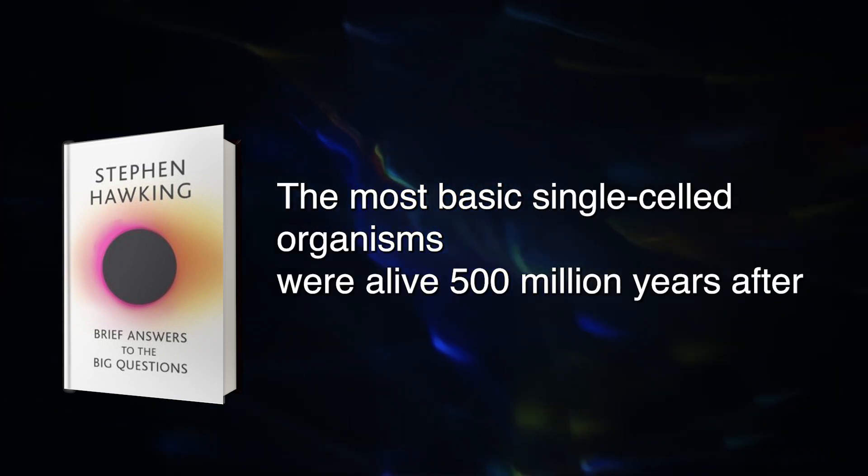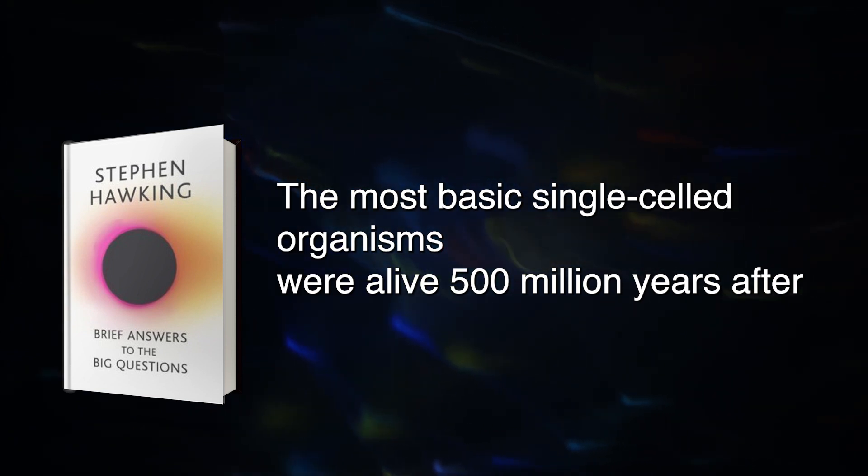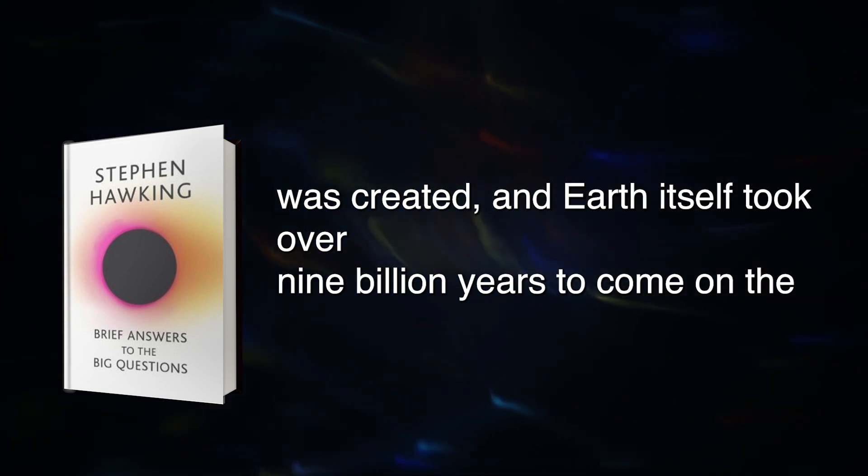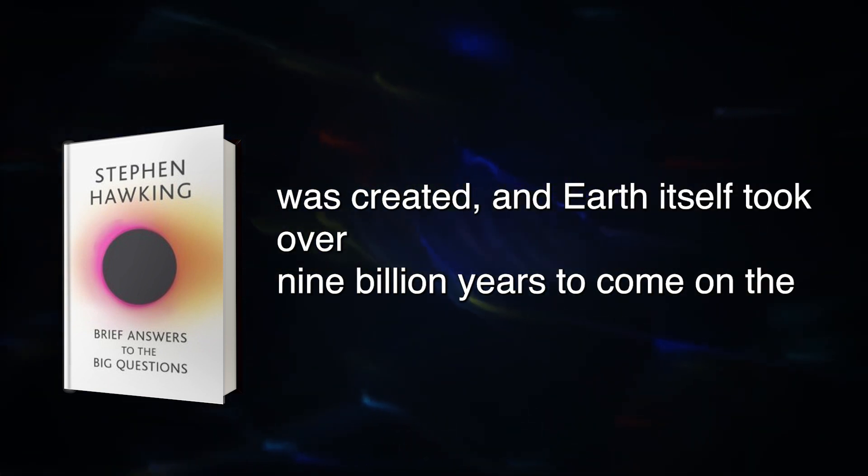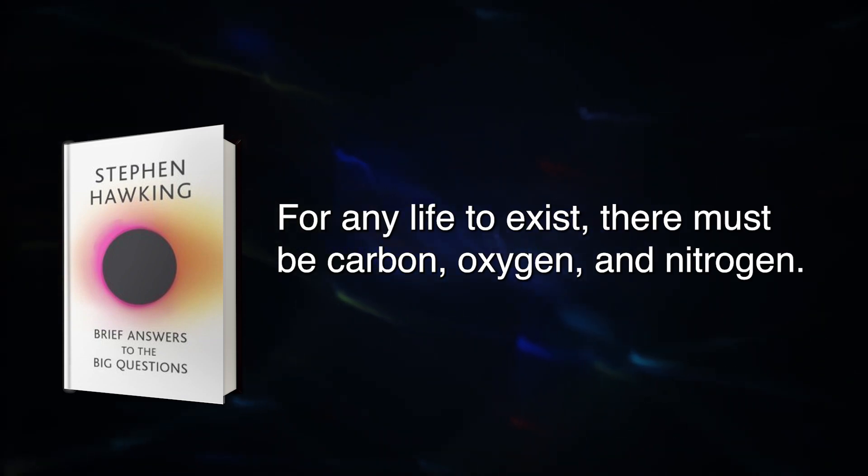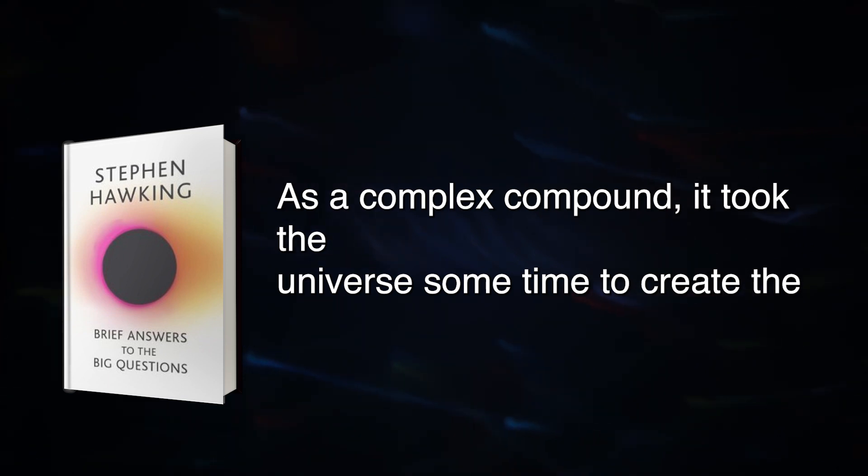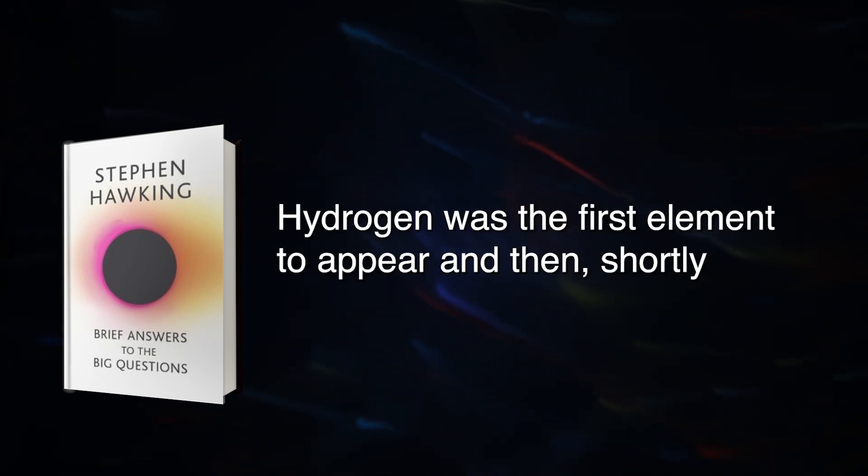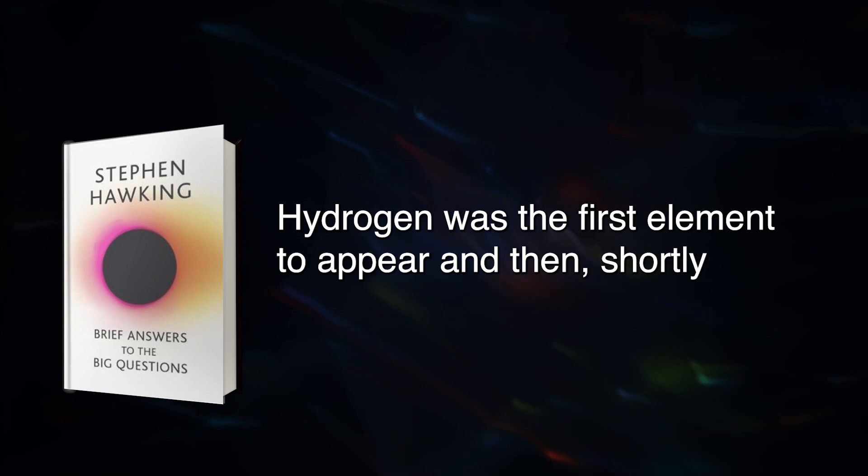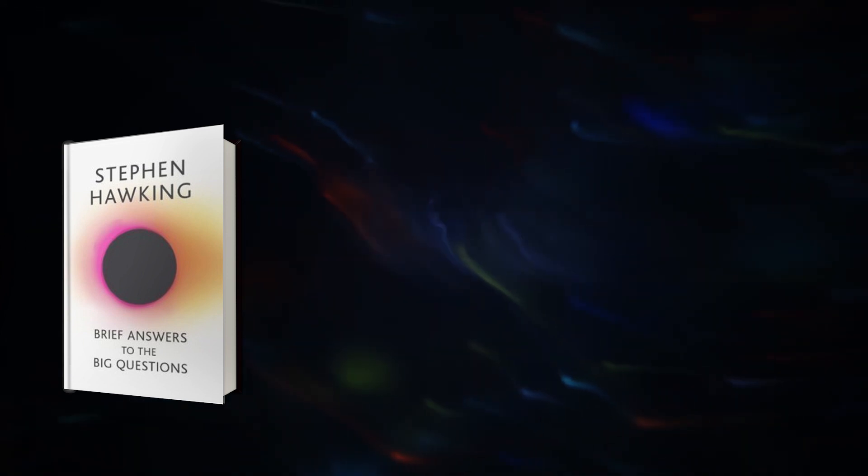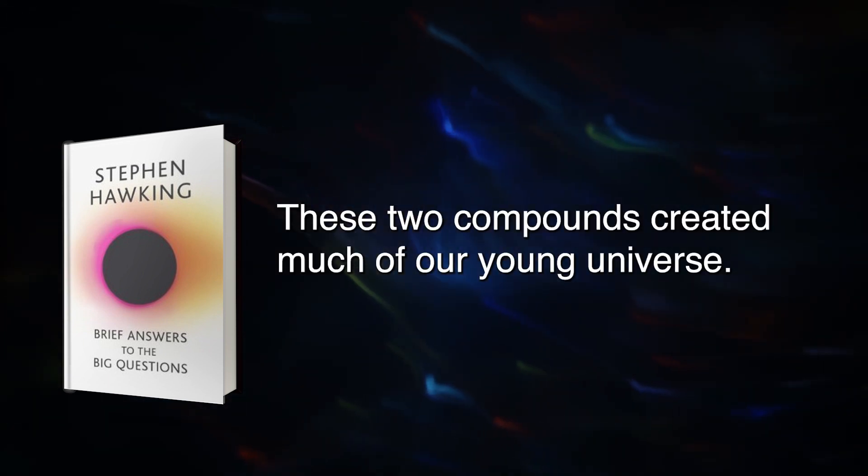The most basic single-celled organisms were alive 500 million years after Earth was created, and Earth itself took over 9 billion years to come on the scene. For any life to exist, there must be carbon, oxygen, and nitrogen. As a complex compound, it took the universe some time to create the conditions that would make carbon. Hydrogen was the first element to appear and then, shortly after, helium was created.